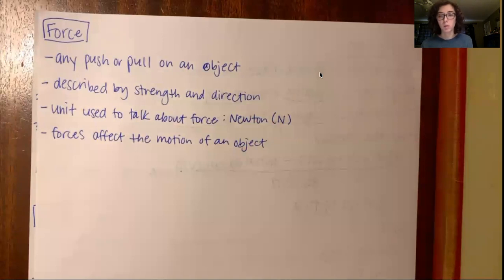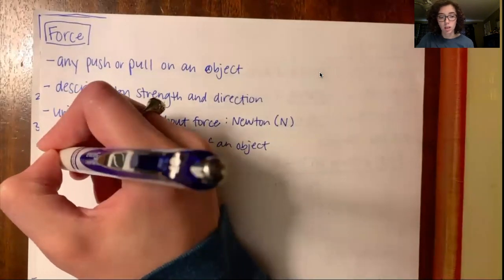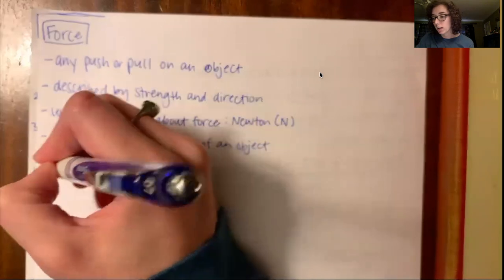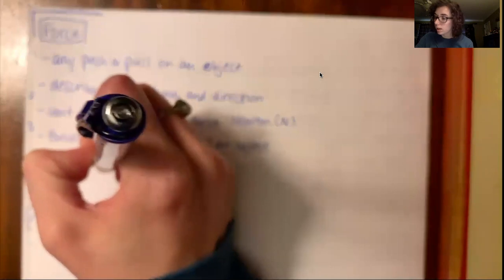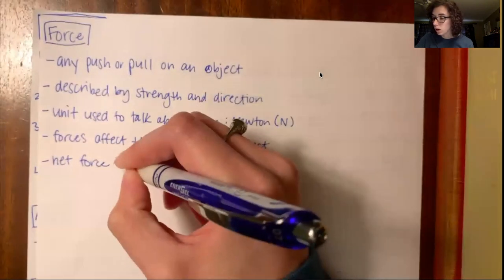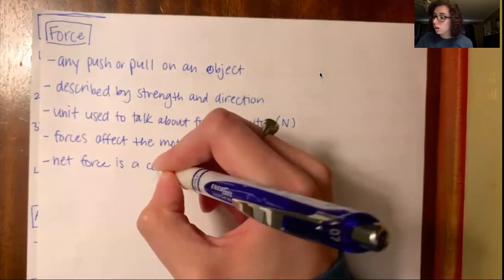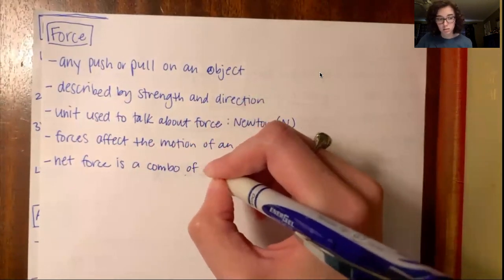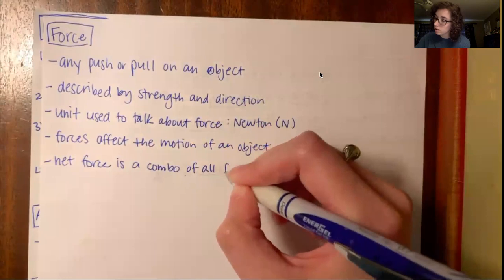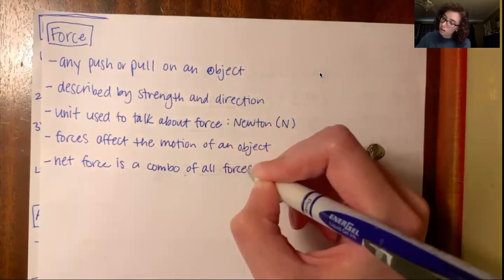So we're going to talk a little bit more about this in a minute. So one way that we talk about force is net force. Okay, so net force is a combo, so a combination of all forces on an object.